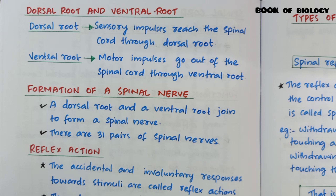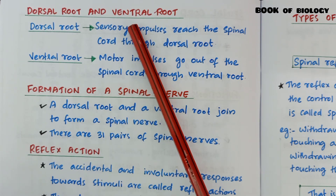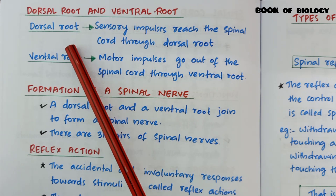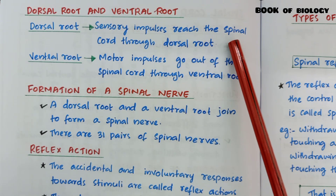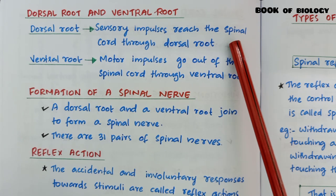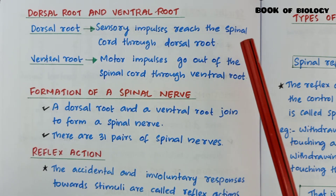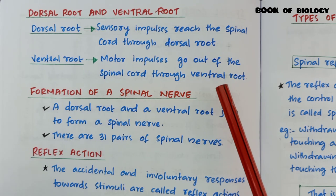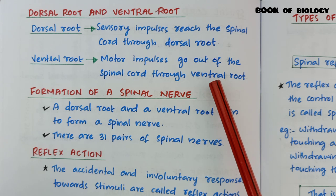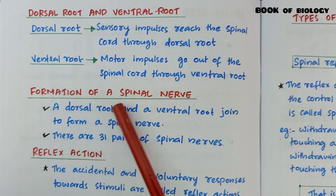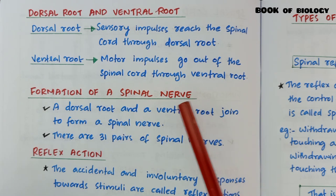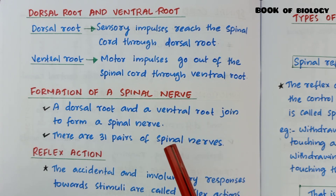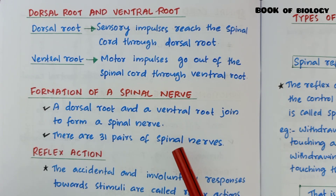Dorsal root: sensory impulses reach the spinal cord through the dorsal root. Ventral root: motor impulses go out of the spinal cord through the ventral root. Formation of a spinal nerve: a dorsal root and ventral root join to form a spinal nerve. There are 31 pairs of spinal nerves.